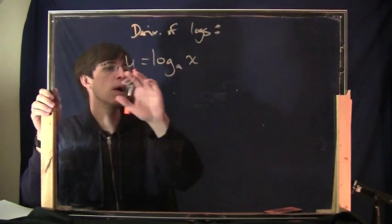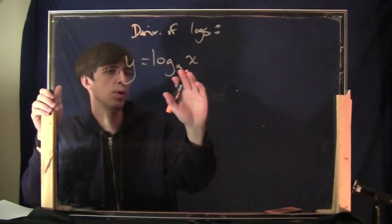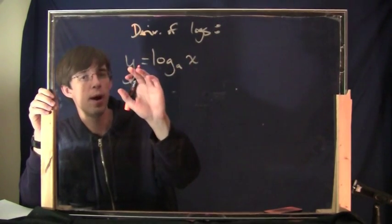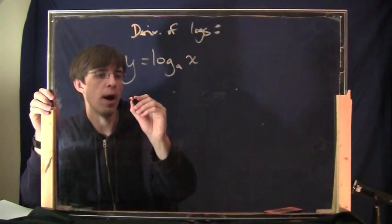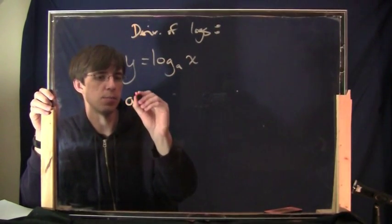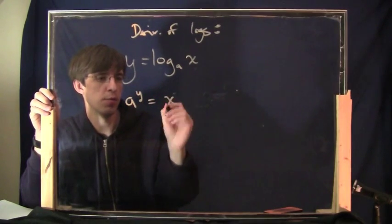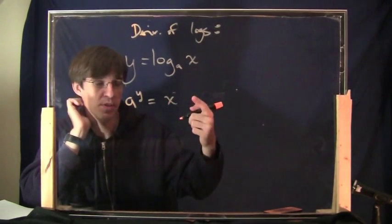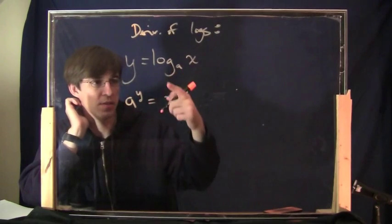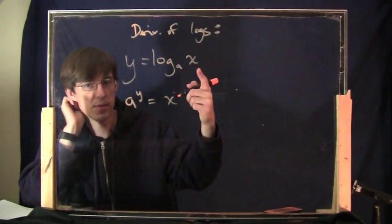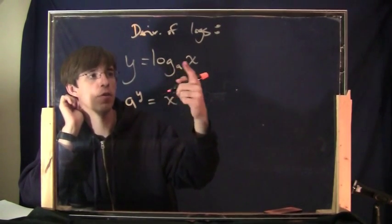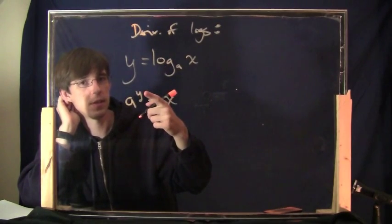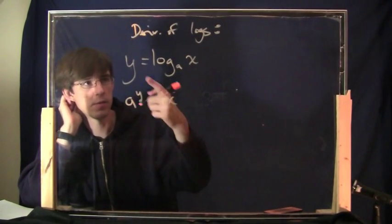What I'm going to do is rewrite this. Remember what this means: log base a of x equals y. That means y is the exponent in a formula like this — a to the y equals x. These are the same as each other. This is the definition of what the logarithm is: the logarithm of x is the exponent which is necessary in order to make a to the y equal x.